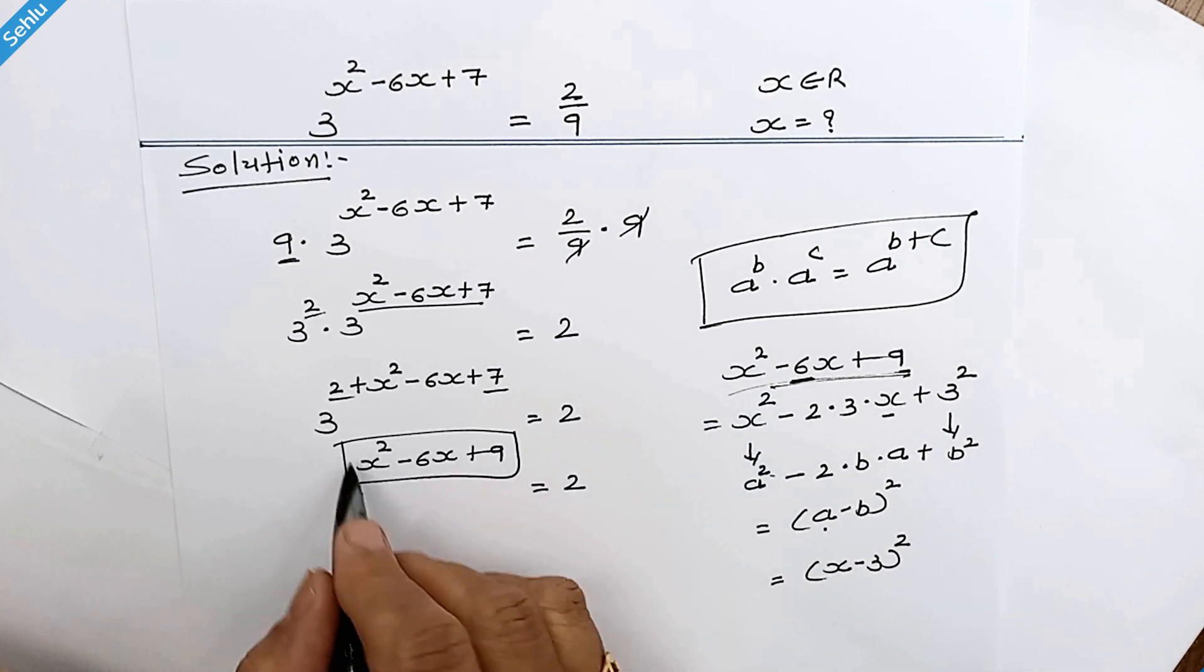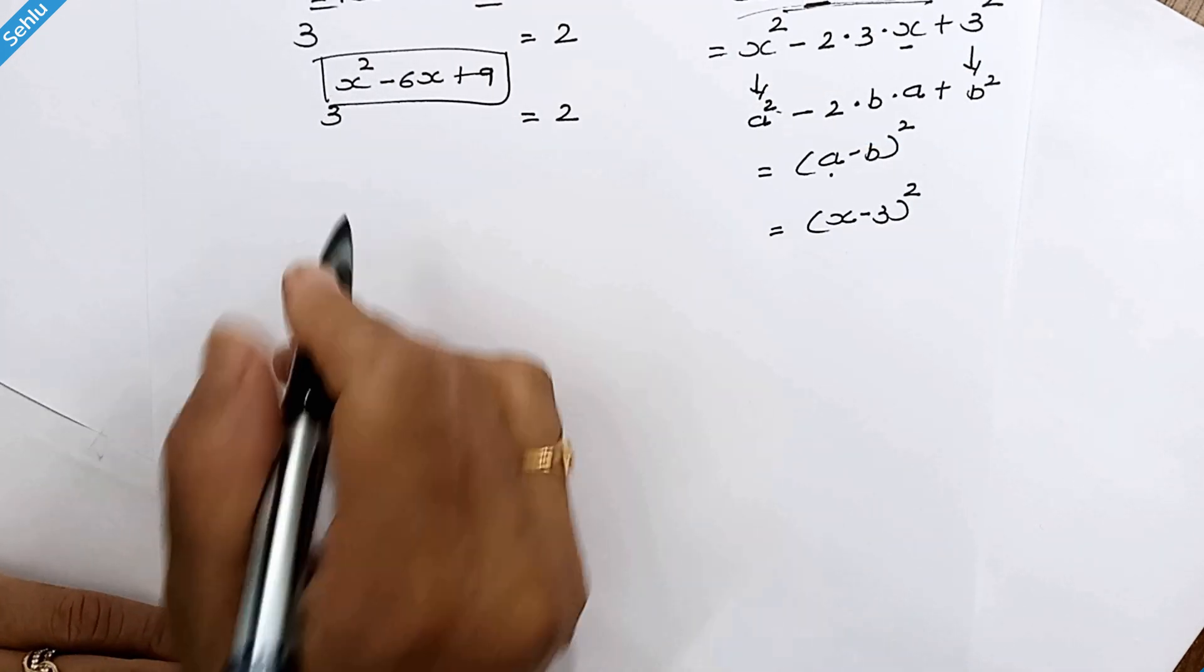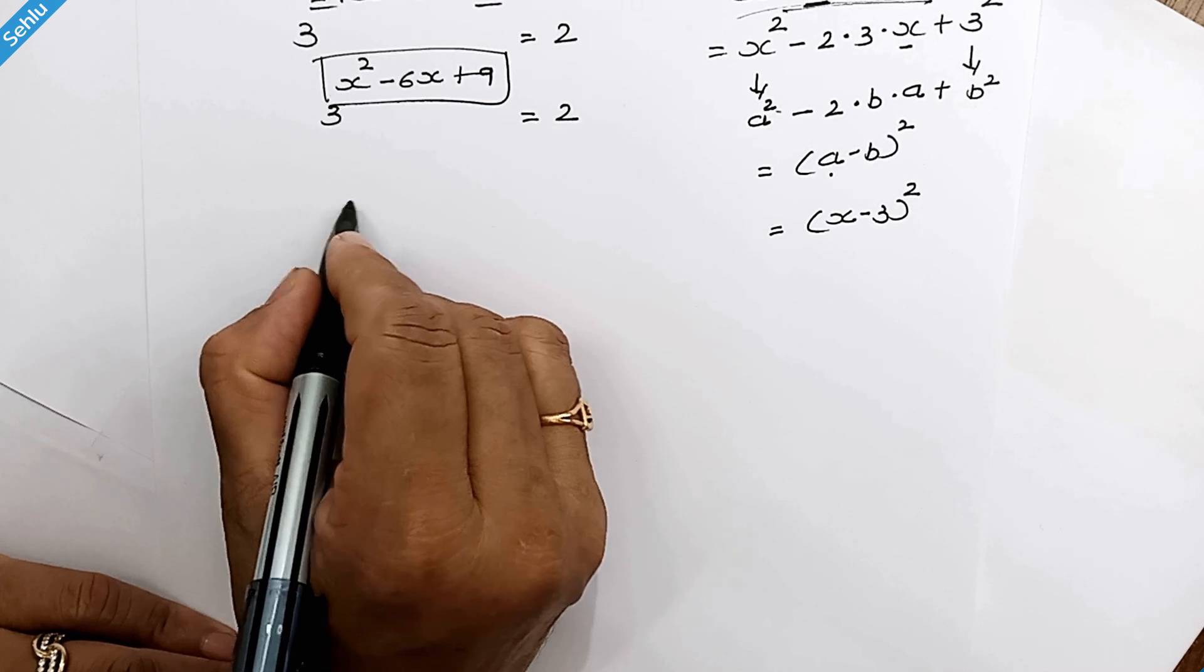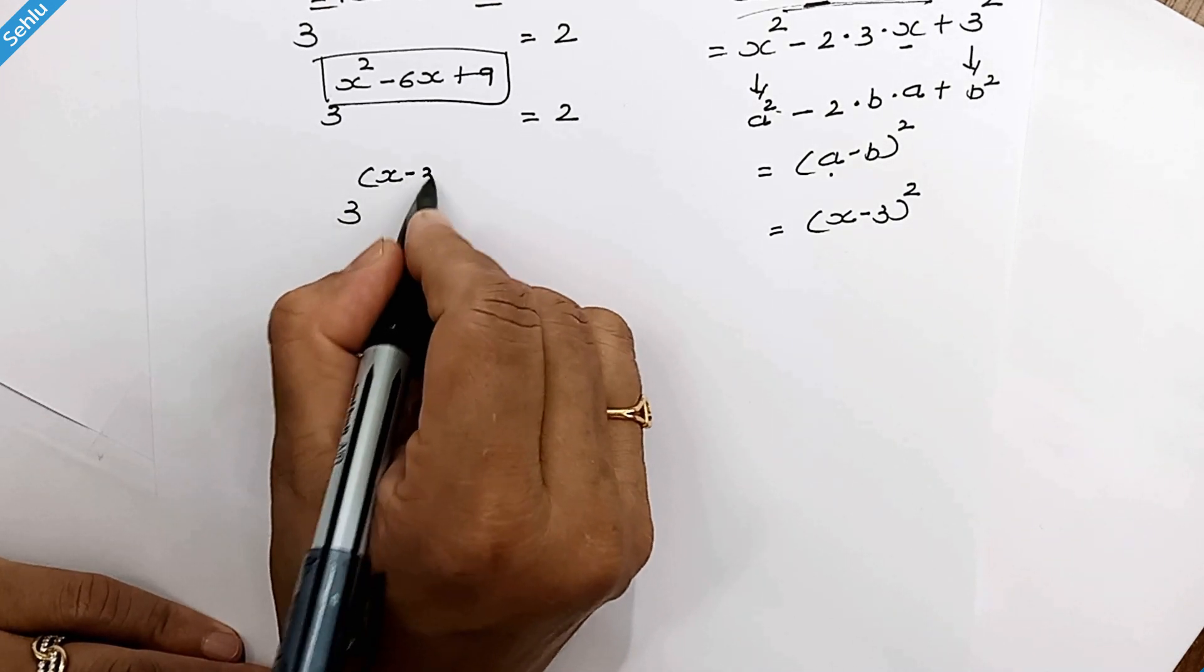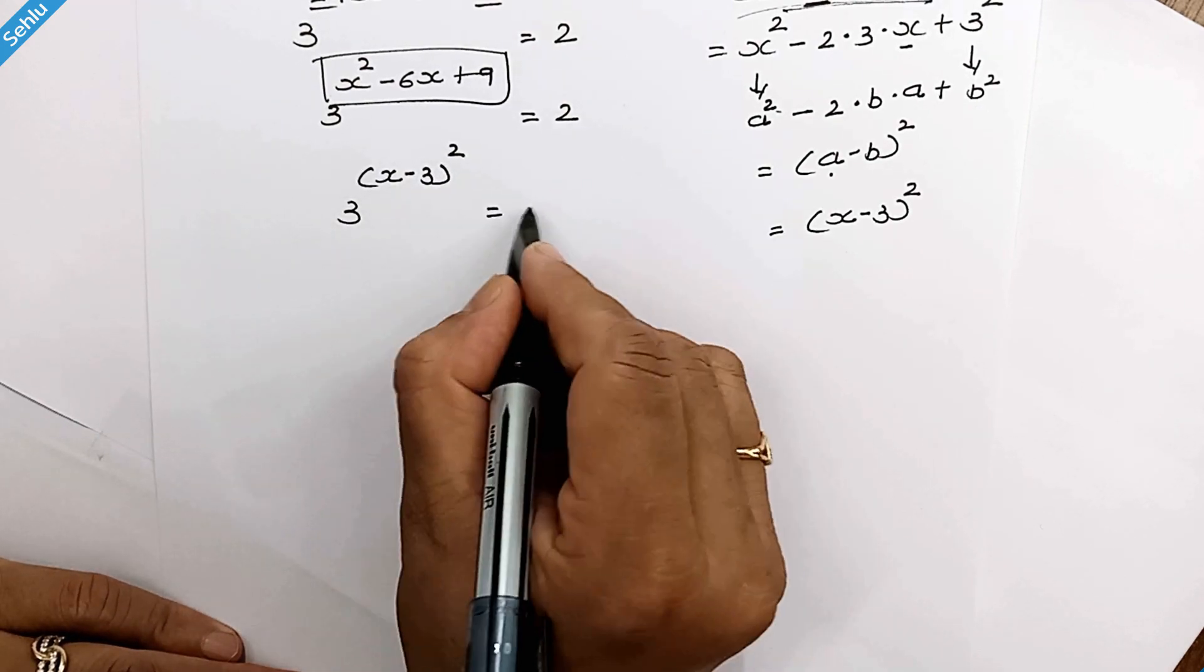And we will put this in place of that. So it will be 3^((x-3)²) equals 2.